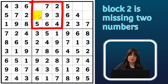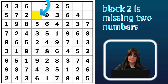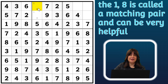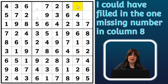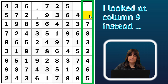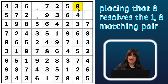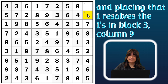Block two is missing two numbers — the one and the eight — in both remaining cells. That is called a matching pair. Not very useful in this case, but in some cases it can be very useful. This column is also missing a one. And this other column only has one number left — the eight. That resolves the matching pair: this has to be the eight, and then this is the one. That makes this cell the one, and this the nine. The puzzle is done!